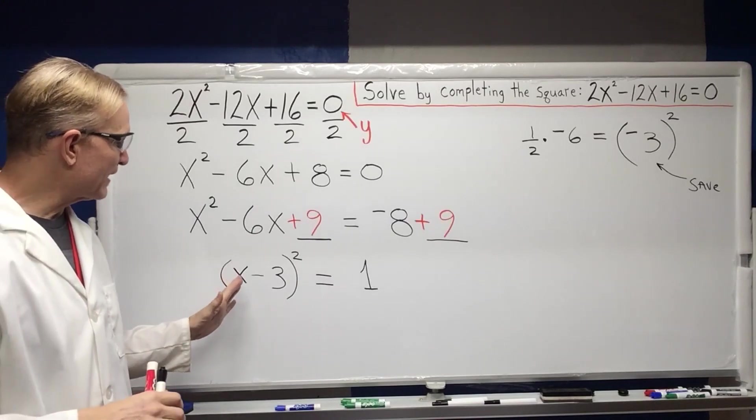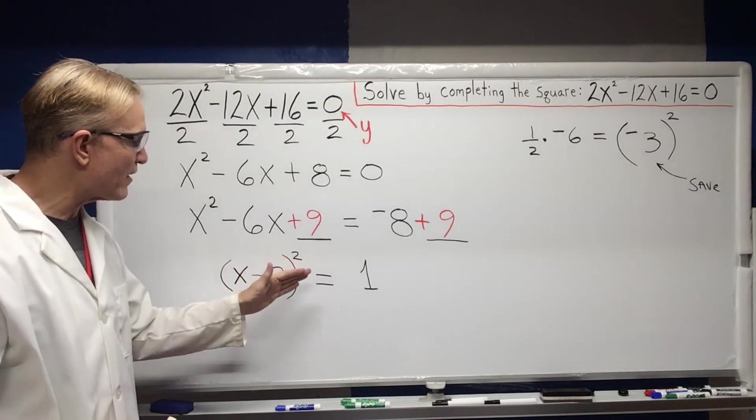Okay, so X minus 3, the quantity of that squared equals 1. Next step.